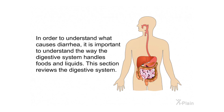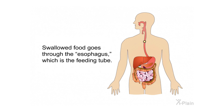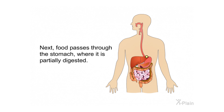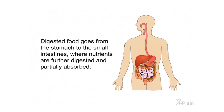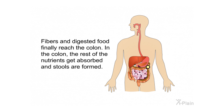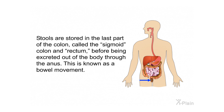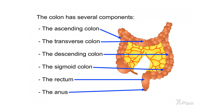In order to understand what causes diarrhea, it is important to understand the way the digestive system handles foods and liquids. Swallowed food goes through the esophagus, which is the feeding tube. Next, food passes through the stomach where it is partially digested. Digested food goes from the stomach to the small intestines, where nutrients are further digested and partially absorbed. Fibers and digested food finally reach the colon, where the rest of the nutrients are absorbed and stools are formed. Stools are stored in the sigmoid colon and rectum before being excreted through the anus.